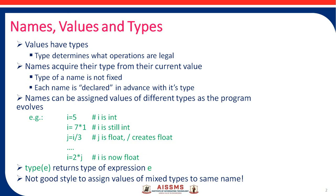As you dynamically change the values assigned to names, the name's type changes. We have to declare a name and its type before its use in your programming language. The names can be assigned values of different types as the program evolves or is dynamically executed. Initially I have assigned the value 5 to the name i. In the next statement I changed that value with the operation 7 multiply by 1, so i is still an integer. But in the third statement, variable j holds the value i divided by 3, which is float division, so j becomes float.